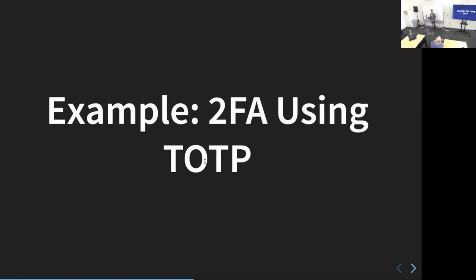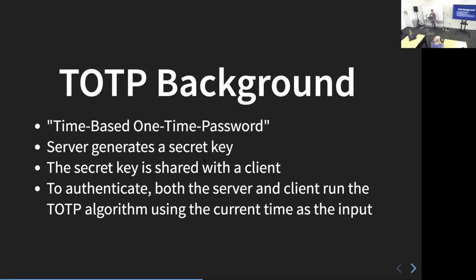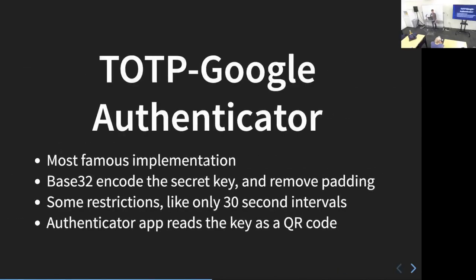On to our second example: TOTP. I think this one's a lot cooler because Haskell having bcrypt seems pretty standard — you could just link a C library — but TOTP is a little less common. TOTP stands for time-based one-time password. The way it works is the server generates a secret key and shares it with the client. To authenticate, both the server and the client run the TOTP algorithm using the current time as an input and compare the one-time password they generate. If it matches, authentication was successful.